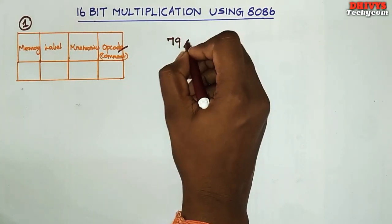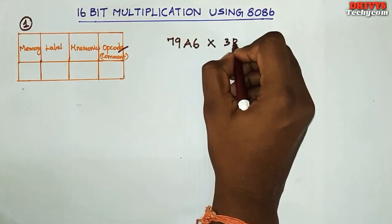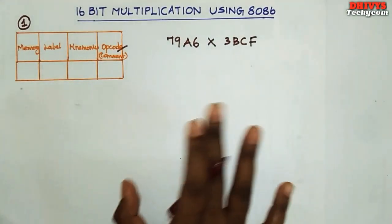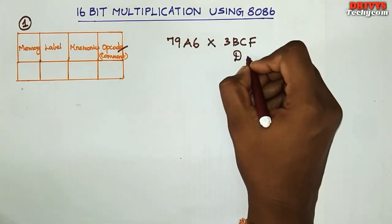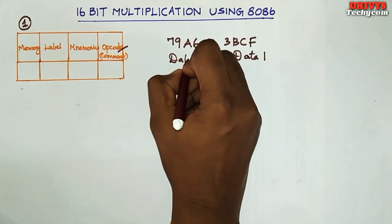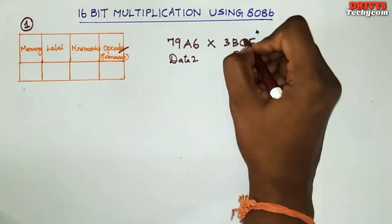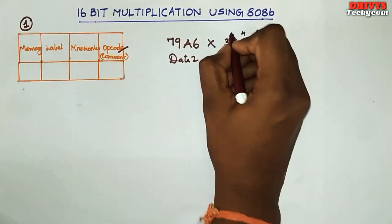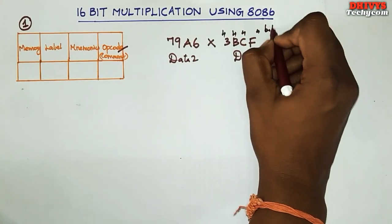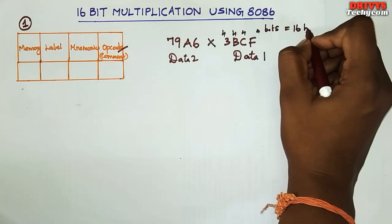For example, 79A6 into 3BCF. Now let's multiply the random data. Assume this is data1 and this is data2. The F is stored in 4 bits, the C is stored in 4 bits, the B is stored in 4 bits, and the 3 is stored in 4 bits. So in total we can use 16 bits.